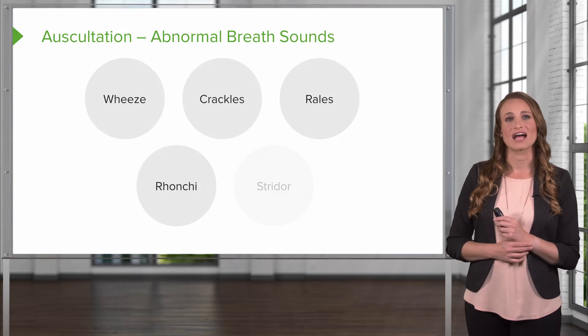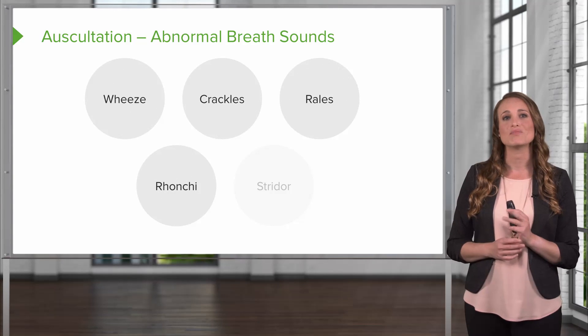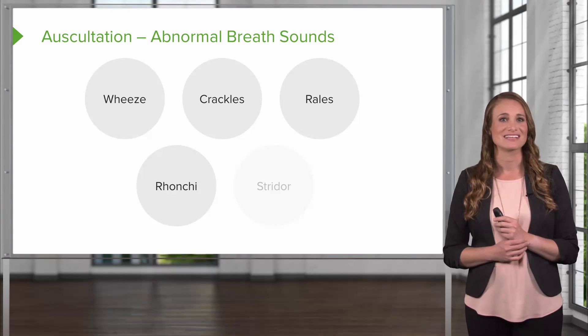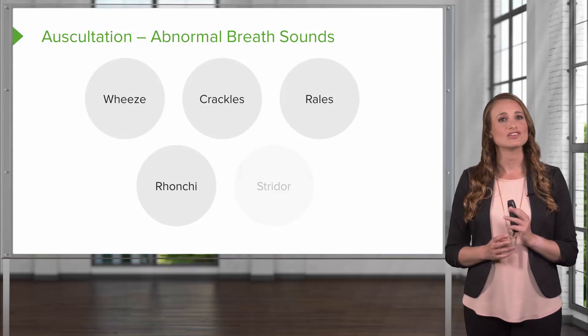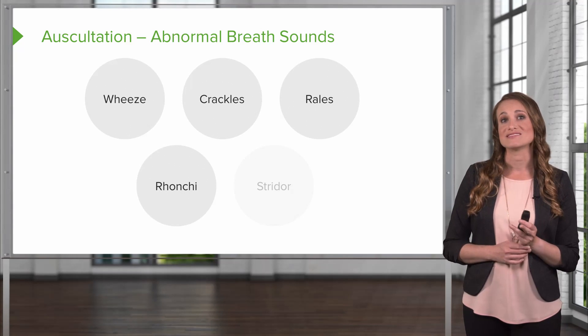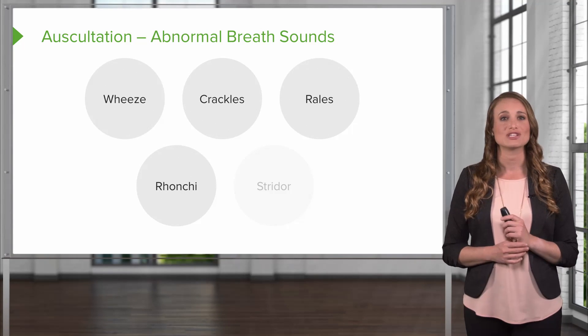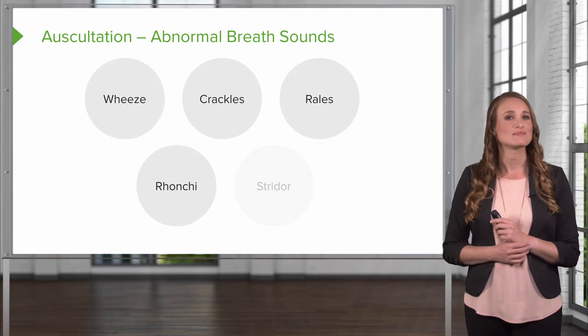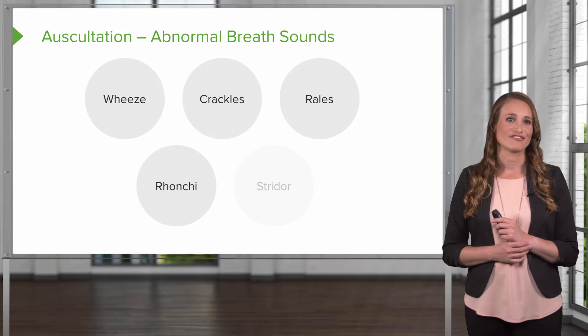Next, you'll check for rhonchi, and these are low-pitched wheezes. They're continuous, and they often sound like snoring. They can be present on inspiration and expiration, and sometimes these clear with a cough.